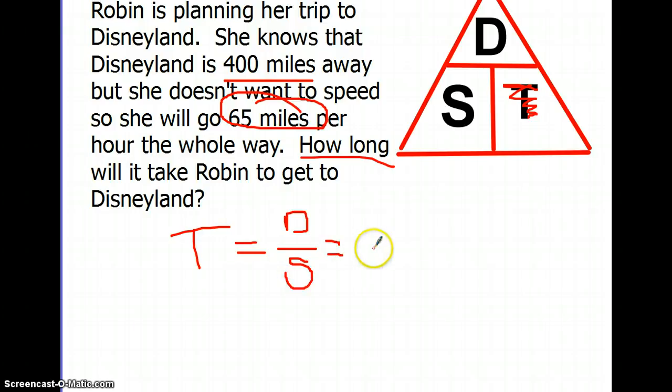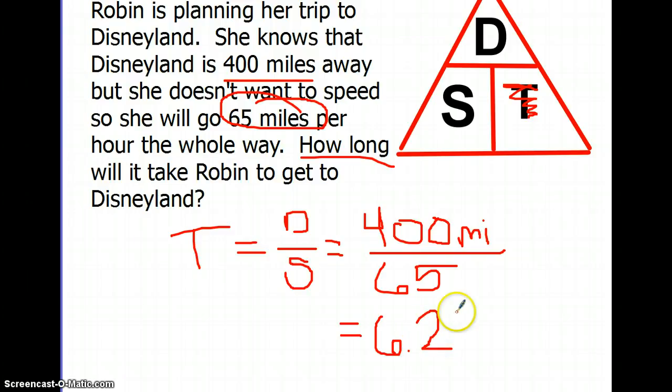Plugging in my numbers just like we did before, the distance that Robin went to Disneyland would be 400 miles. And the speed that she's going to be traveling is 65 miles per hour. I'm not going to include the unit for the sake of time. If I do my math correctly, 400 divided by 65 is 6.15384615. We're just going to go one decimal place and stop. 6.15, I can round up to 6.2. It will take Robin 6.2 hours to get to Disneyland.